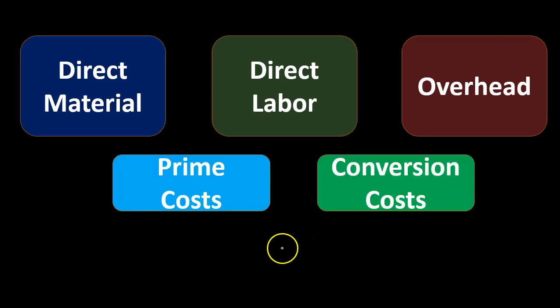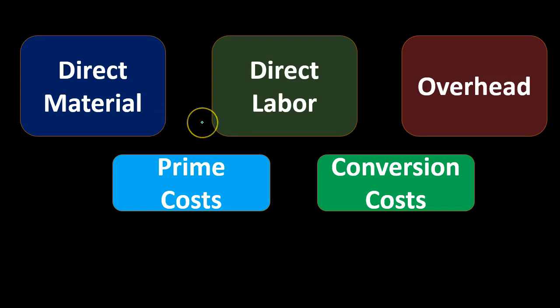When we consider these in terms of prime costs and conversion costs, there is a bit of an overlap. Prime costs represent what is going to be directly within the product — they include direct materials and direct labor. We can't really see the direct labor within the product like we can direct materials, but it is so closely associated with and essential to the production that we call these the prime costs.